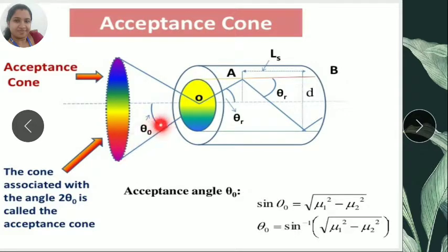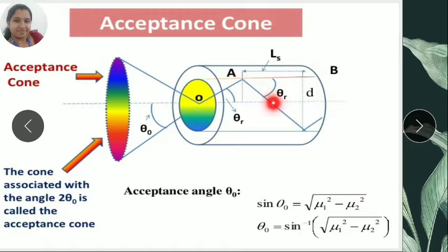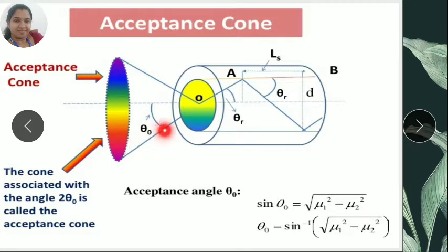Here this is the incident ray and this is the angle of incidence. At this angle of incidence, the light ray enters into the core and it is incident on the core-cladding interface. At this core-cladding interface, light gets reflected — that is, total internal reflection occurs — and it is incident on the bottom core-cladding interface. At this point, again it gets reflected, and by continuous total internal reflection, the light ray is transmitted from one end to the other. So from here we can see that acceptance angle is the angle of incidence at which the light ray can be transmitted through the optical fiber by total internal reflection.